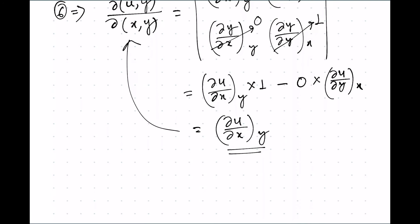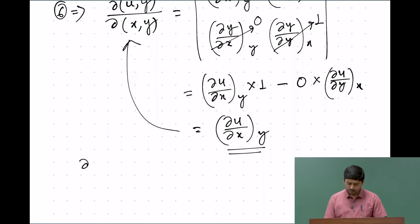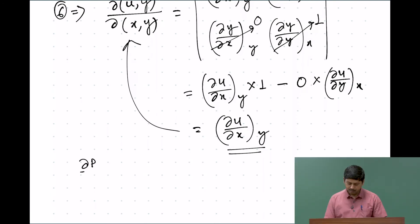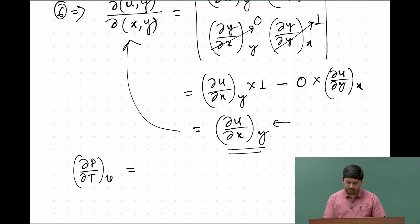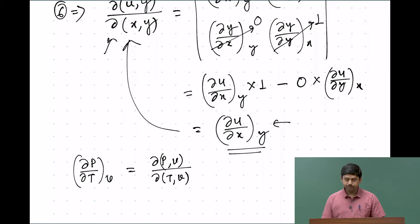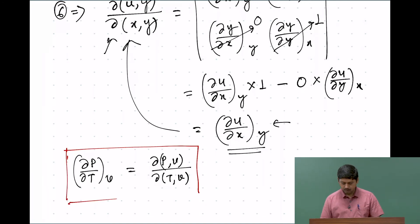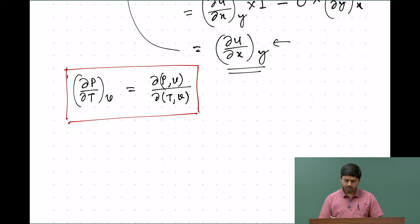We can always write partial derivatives in Jacobian notation. For example, del P/del T at constant V can be written in Jacobian notation as d(P,V)/d(T,V). This conversion is very important because we need to use this format repeatedly.